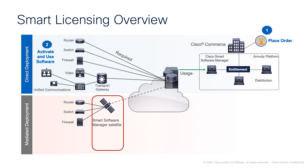For controlled environments, the satellite server also has the option to be disconnected, meaning there is a requirement to transfer the collected information using manual synchronization at least once a month. In this model, the system is not directly connected to the cloud, therefore an air gap exists between the customer's network and the Cisco Cloud.